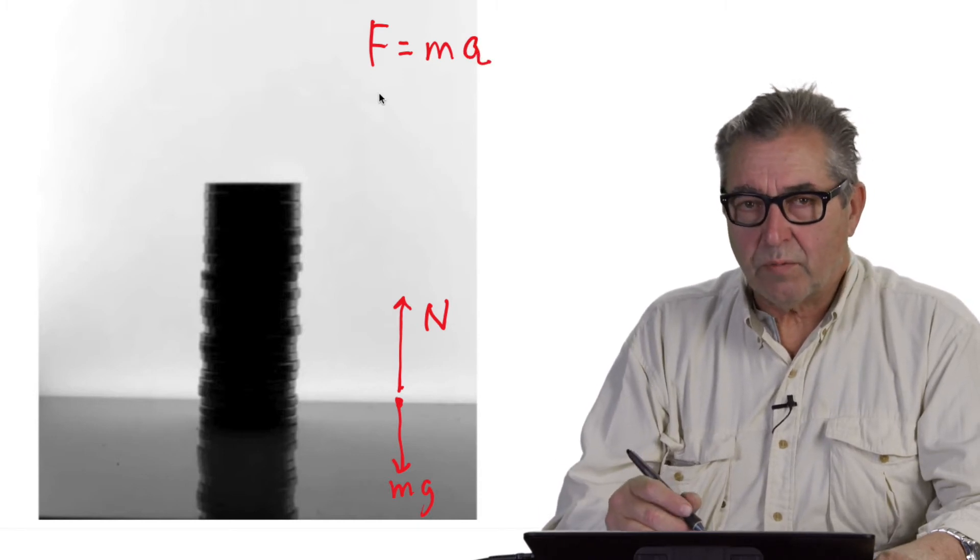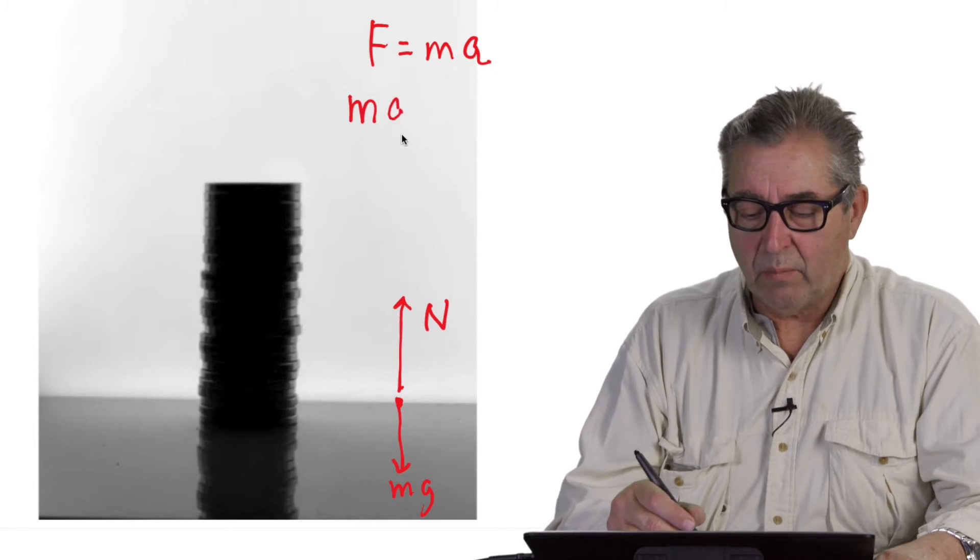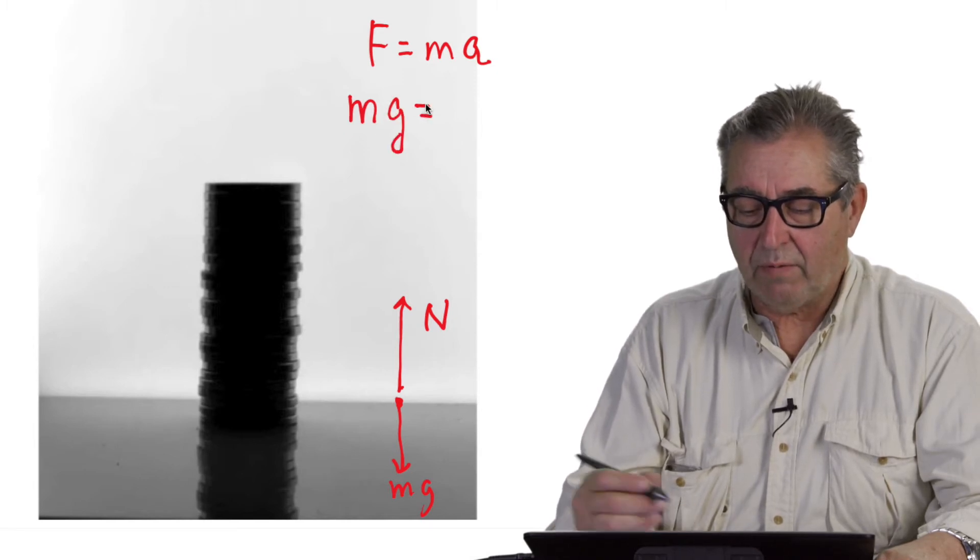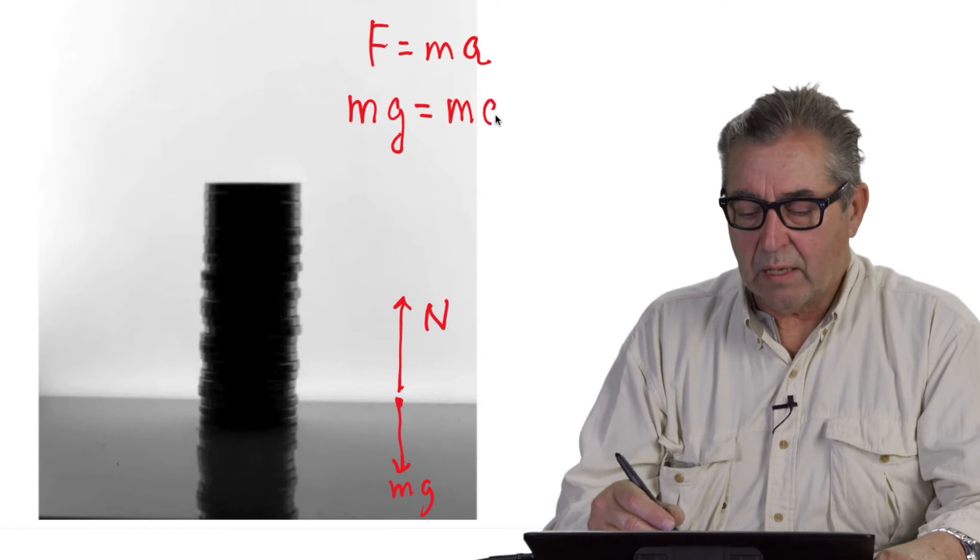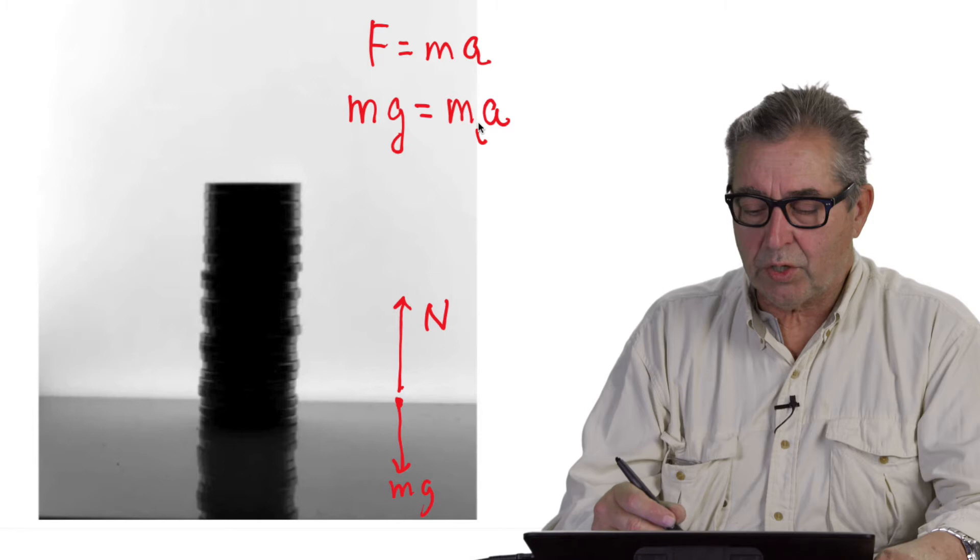What force causes free fall? Weight. And weight is mass times the acceleration of gravity. What mass on the right controls acceleration? Inertial mass.